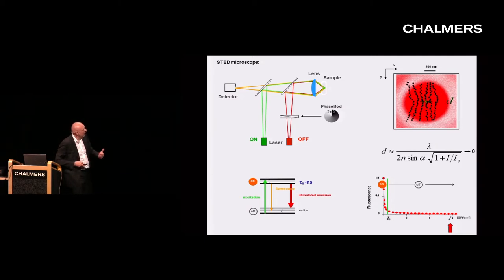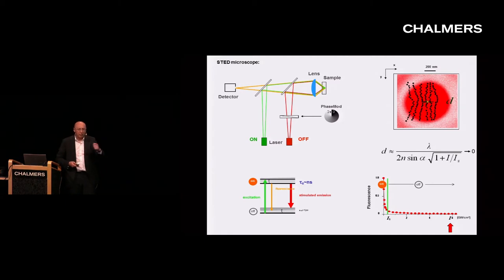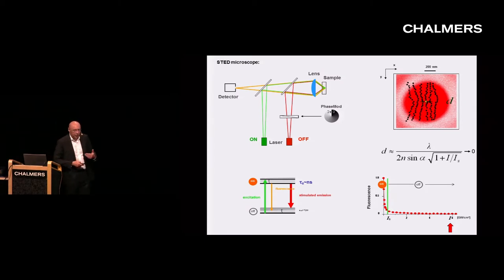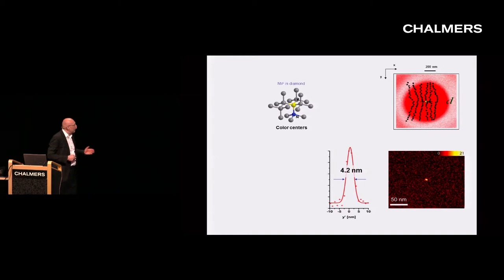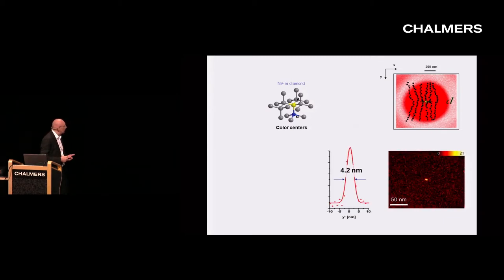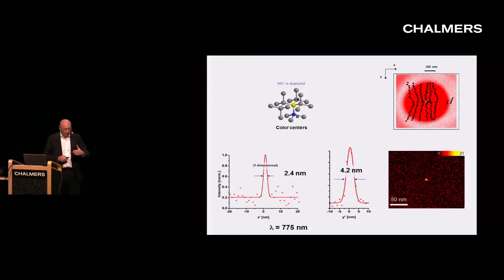If you develop this method, you ask what you need. You need a fluorophore that can be turned on and off many, many times. Organic molecules are not perfect for that — they can only be switched a limited number of times. But there are inorganic fluorophores, specifically a so-called NV center in diamond, which is a color center that can be turned on and off basically at will, as often as you want. This has allowed us to go down to very small dimensions — starting from the diffraction limit down to 4.2 nanometers, and the smallest we achieved was 2.4 nanometers.